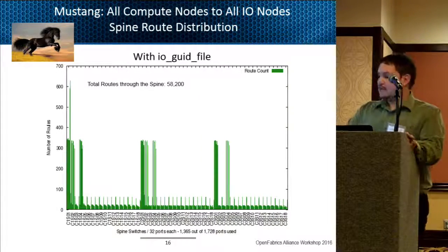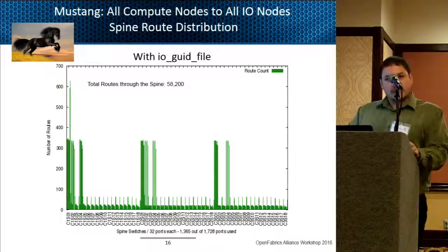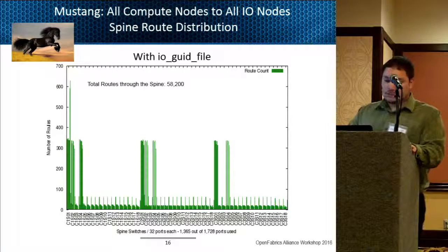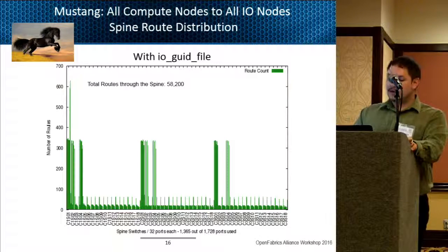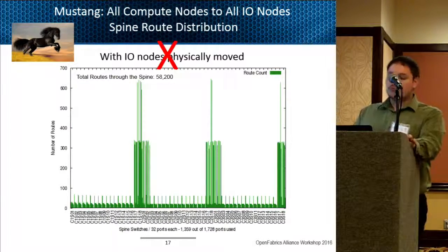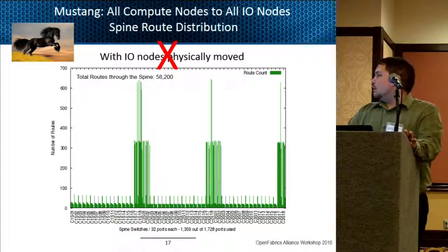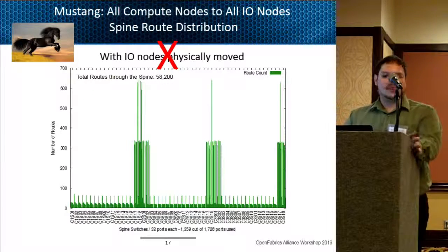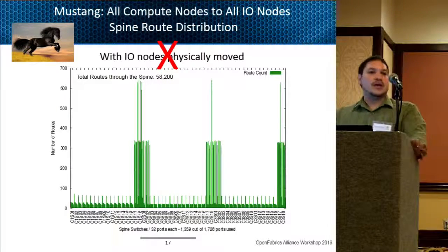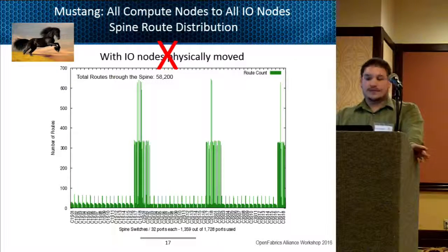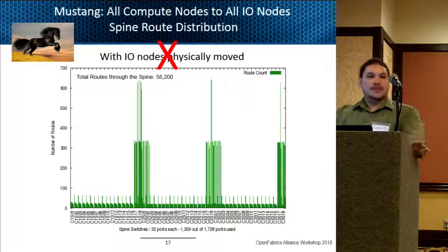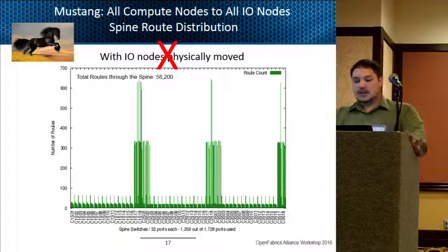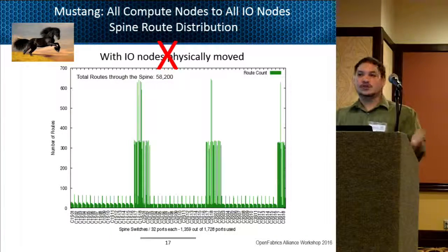We tried the same testing with the IO GUID file on Mustang — the routes did change a little bit, helping to balance them out somewhat, though not as dramatically as on Wolf. There were still spikes on some spine card ports, but not enough for a complete balance between compute and IO node. When we then tested physically moving the IO nodes, we saw an interesting result: moving them didn't make a difference for Mustang. This is because Mustang was set up differently — with multiple IO nodes, about four or five, on only a handful of leaf or line cards. So physically moving them on the same switch did not help in balancing the routes, and having multiple IO nodes on one line card was not sufficient for bandwidth or route balance.